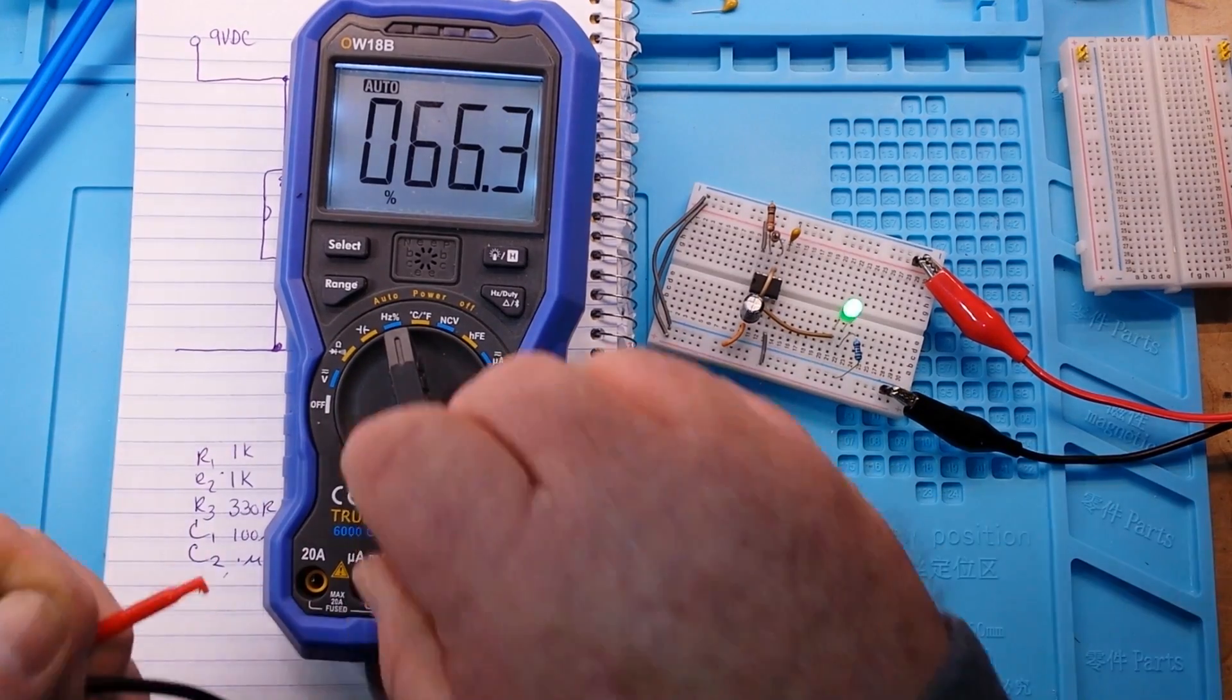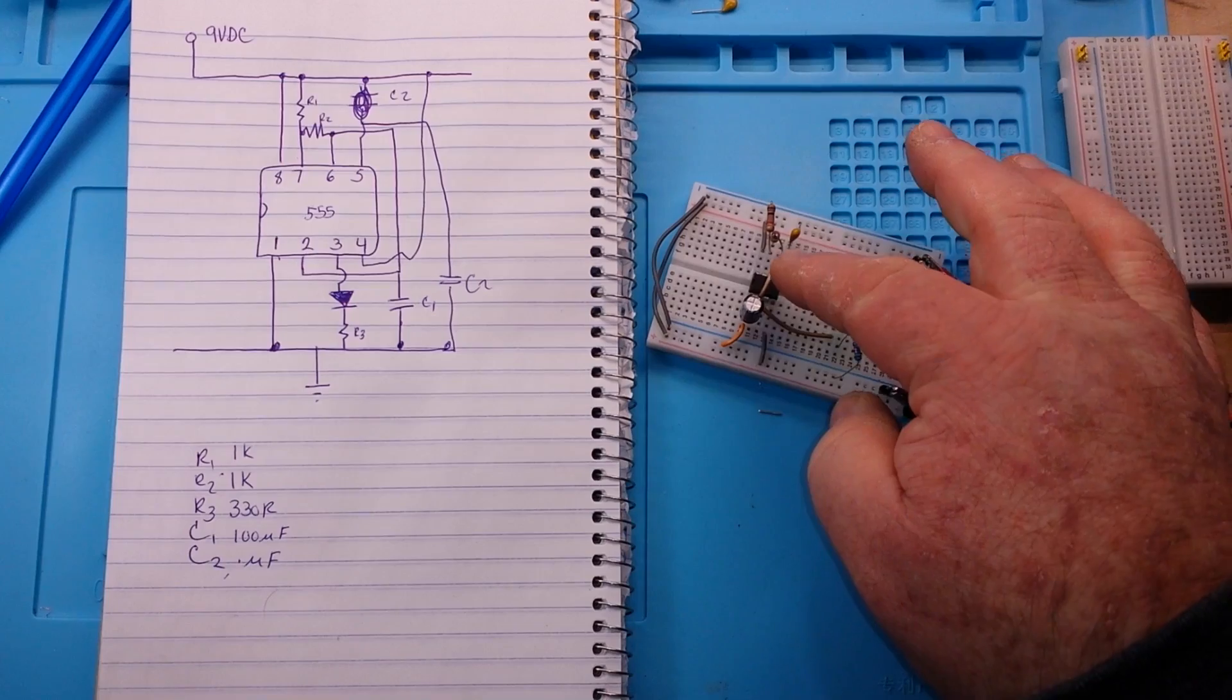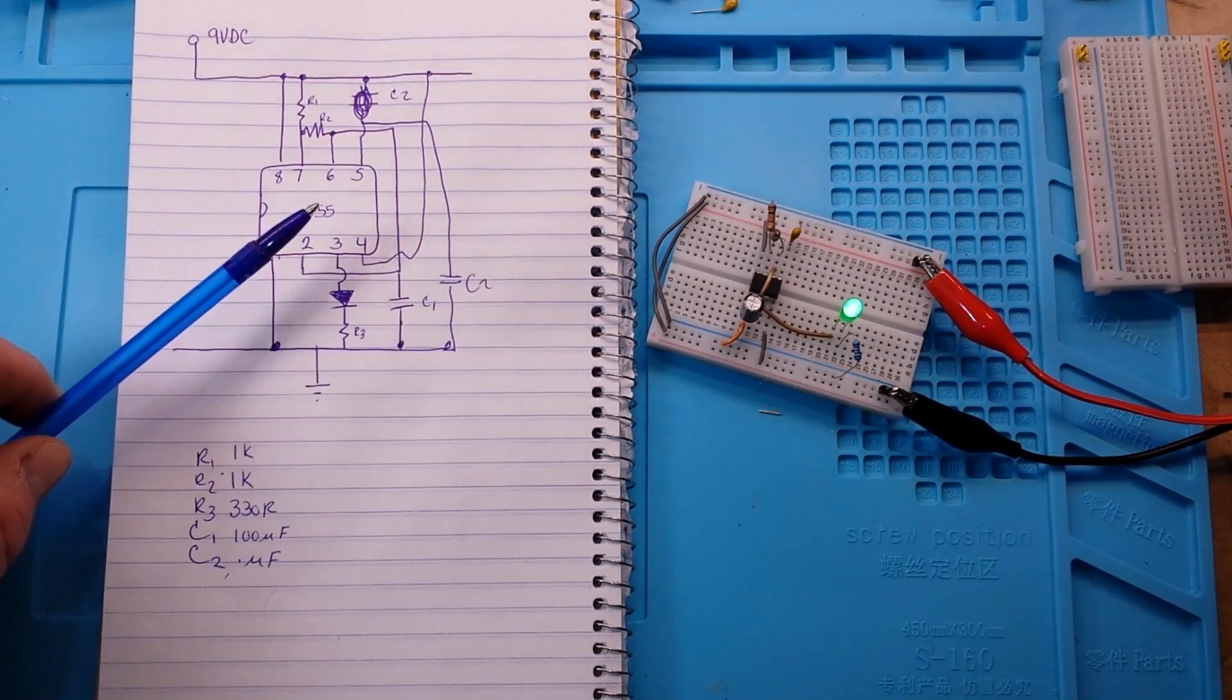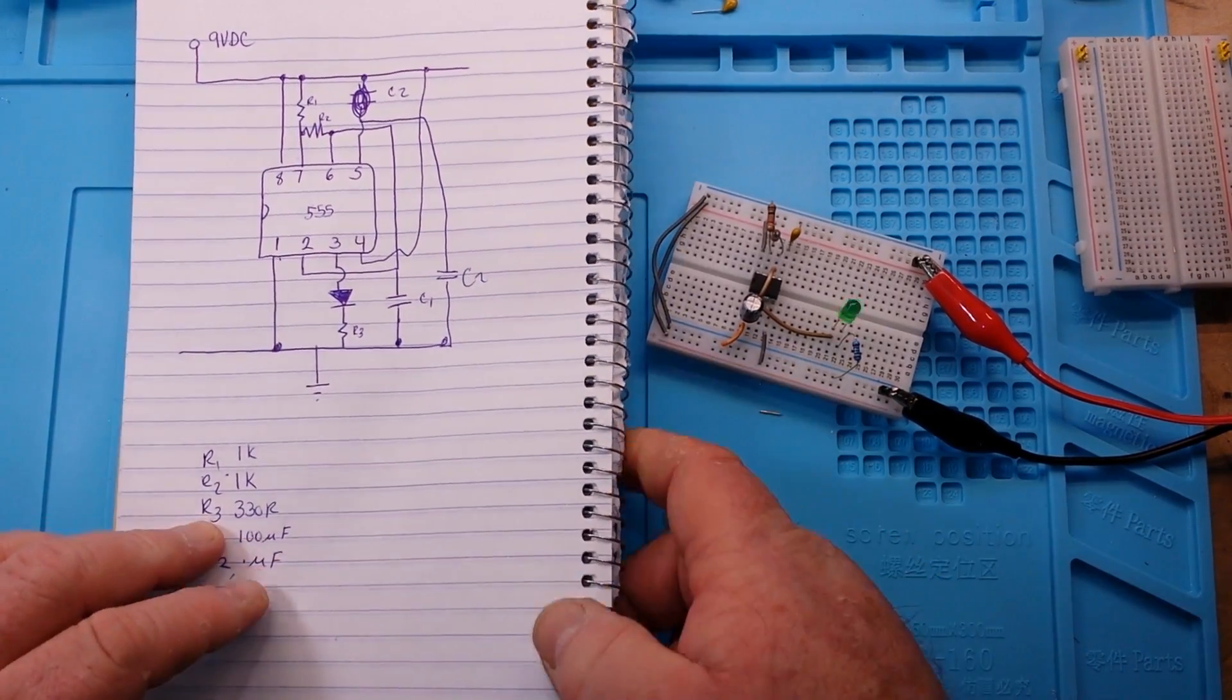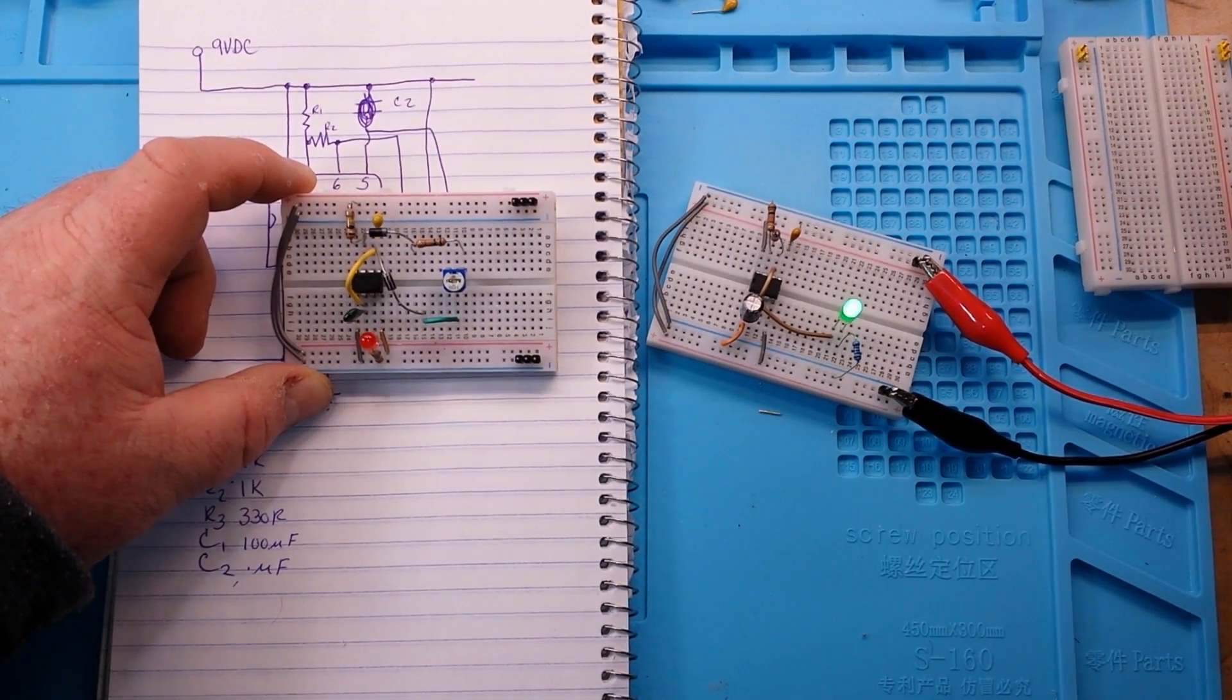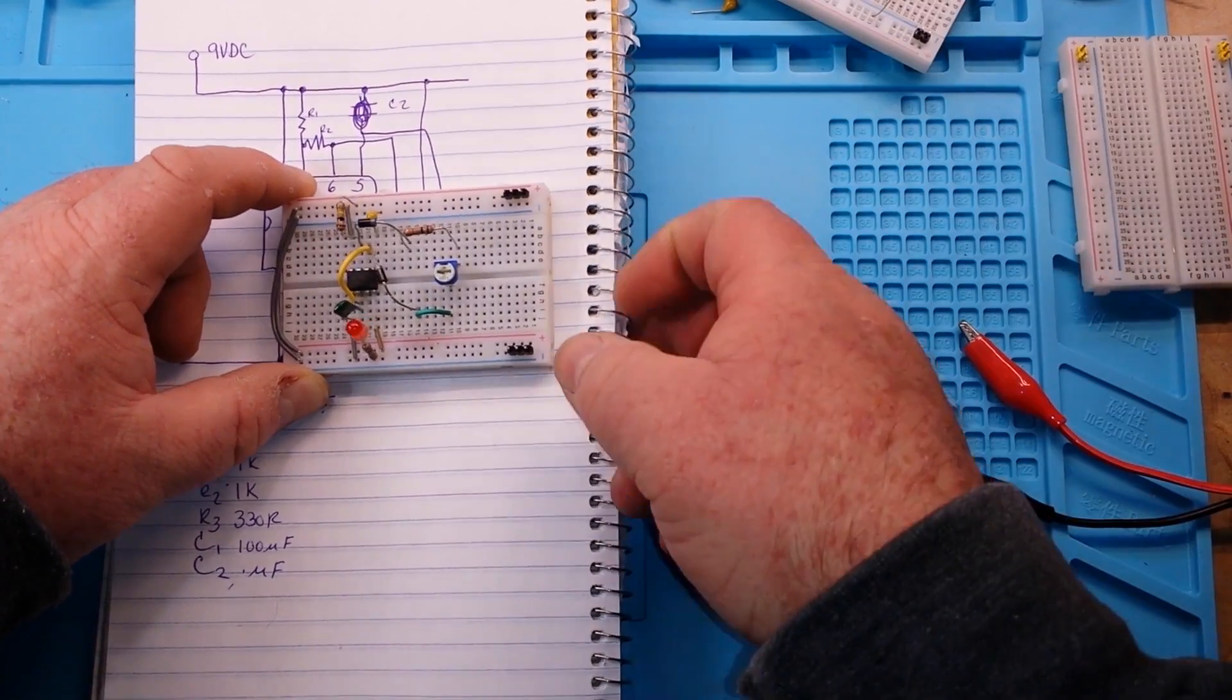Now we can change the duty cycle of the 555 timer by changing the ratio of those resistors, but that's kind of a hardwired thing and it can be a pain in the butt to do. Also it's going to have some effect on the frequency and a whole lot of things like that. So what this video is more about is to talk about this circuit here which allows us to control the duty cycle of our 555 timer.